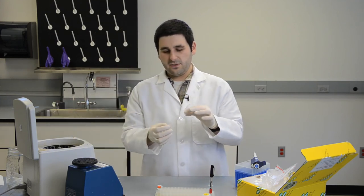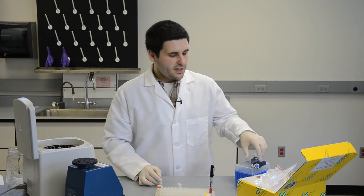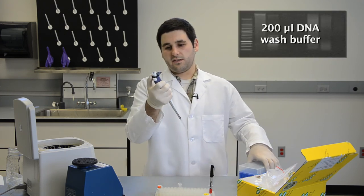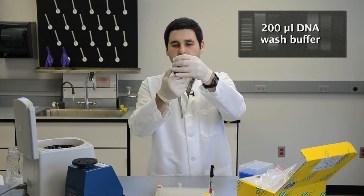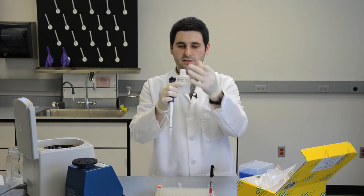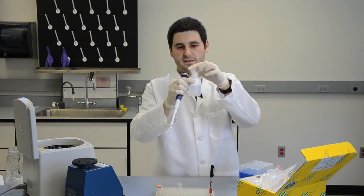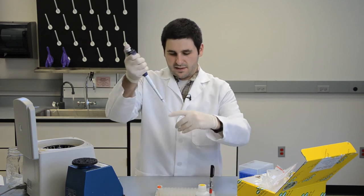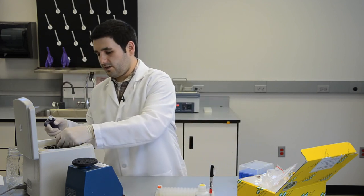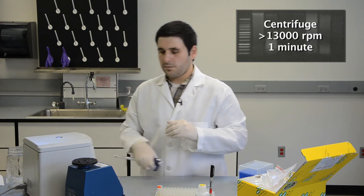Discard the flow-through and return the filter basket back to the chamber. You are going to finally add only 200 microliters of the wash buffer. You want to wash it twice, first time adding 300, the second time adding only 200 microliters. Then return it to the centrifuge and centrifuge it for one minute at 13,000 RPMs again.